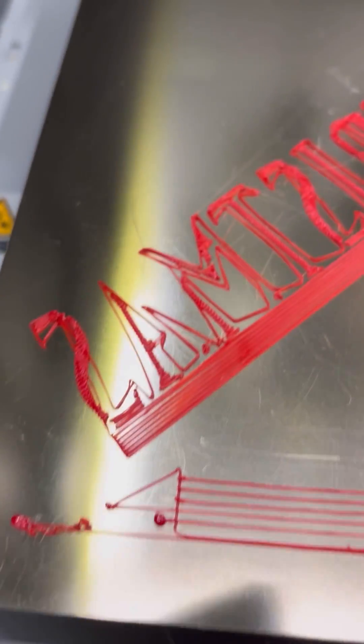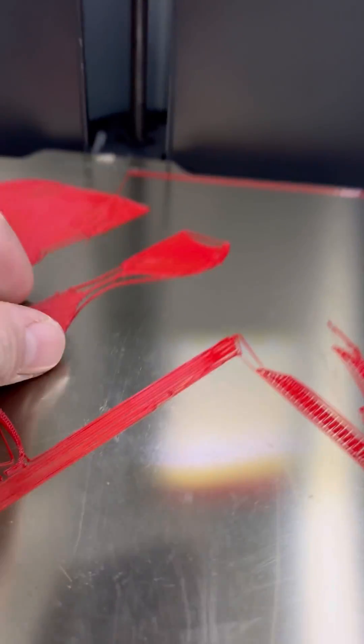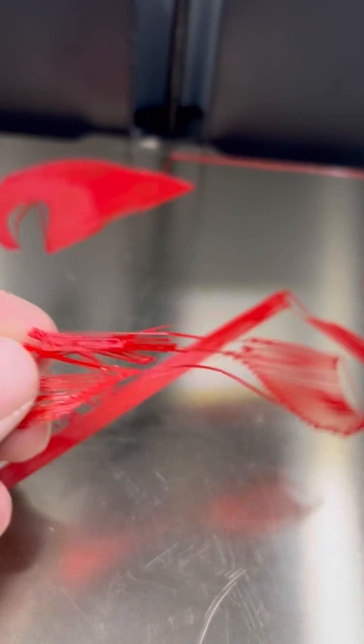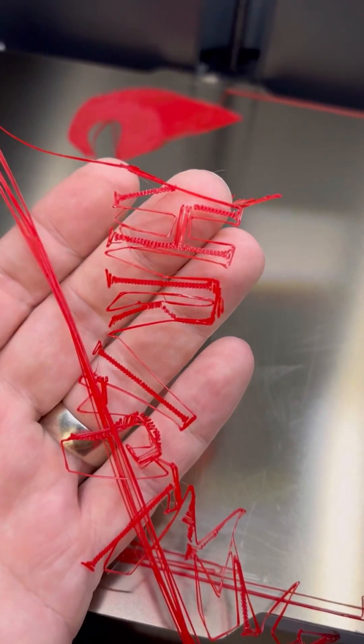And once again, I still cannot figure out why it keeps printing like this every so often. As you can see, it doesn't adhere right, it's just spaghetti. It's not spaghetti layered, but it just doesn't print together. I just don't get why it keeps doing this. I've done so many different settings, I have reset everything back to default.